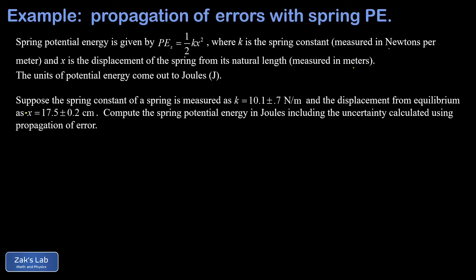I'm going to write x in meters by shifting the decimal point twice, getting 0.175 plus or minus 0.002 meters. Let me copy k right here for easier reference: that's 10.1 plus or minus 0.7 newtons per meter. So we're guaranteed that our potential energy is going to come out in joules.